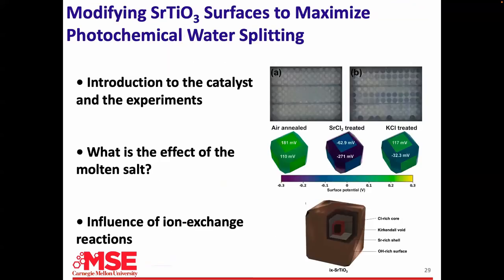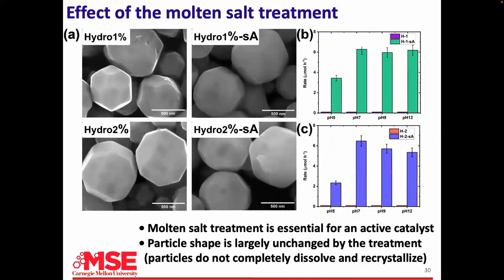Moving to more recent work: the molten salt reaction. One thing Doman's group discovered about 10 years ago is that to make strontium titanate so reactive, you need to give it a bath in molten strontium chloride. These are 1% and 2% aluminum particles we grew. If you measure the hydrogen from them in my crude reactor, we can't even measure anything. Take the same particles, give them this bath, and now they produce a lot of hydrogen. The aluminum doping is important, the co-catalysts on the surface are important, but without this molten salt treatment it doesn't work.